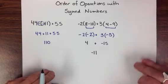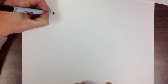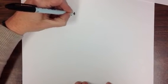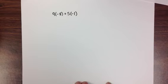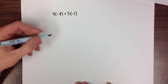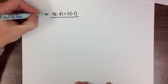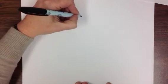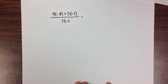Our last practice problem is what we call a complex fraction, because the whole thing is a fraction but it has a numerator and a denominator that both have math in them. The numerator is 9 times negative 8 plus 5 times negative 1, and the denominator is 12 minus 1. Our first step is to simplify the numerator and denominator separately.